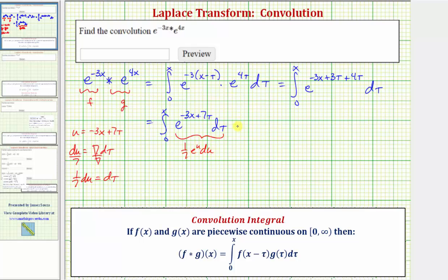Which means the anti-derivative is going to be one-seventh e raised to the power of negative 3x plus 7 tau. And we integrate from tau equals zero to tau equals x.